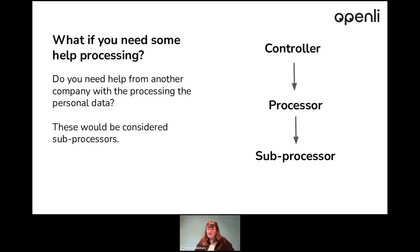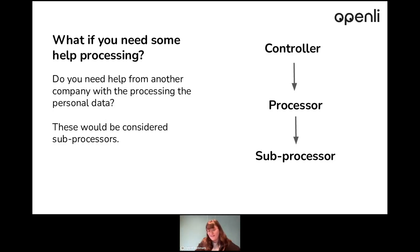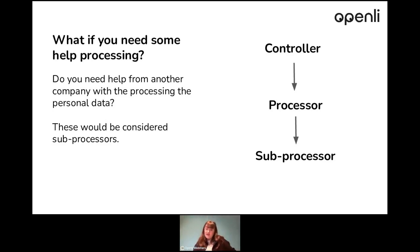I mentioned it earlier: sub-processing. Sub-processing isn't necessarily defined within the GDPR — it's more defined as when you are a processor and you need another processor to help you with your processing. For example, you have a controller who needs a processor — that would be the dry cleaner example. But if the dry cleaner needs help again, they can then engage another processor to help them with processing the original controller's personal data.